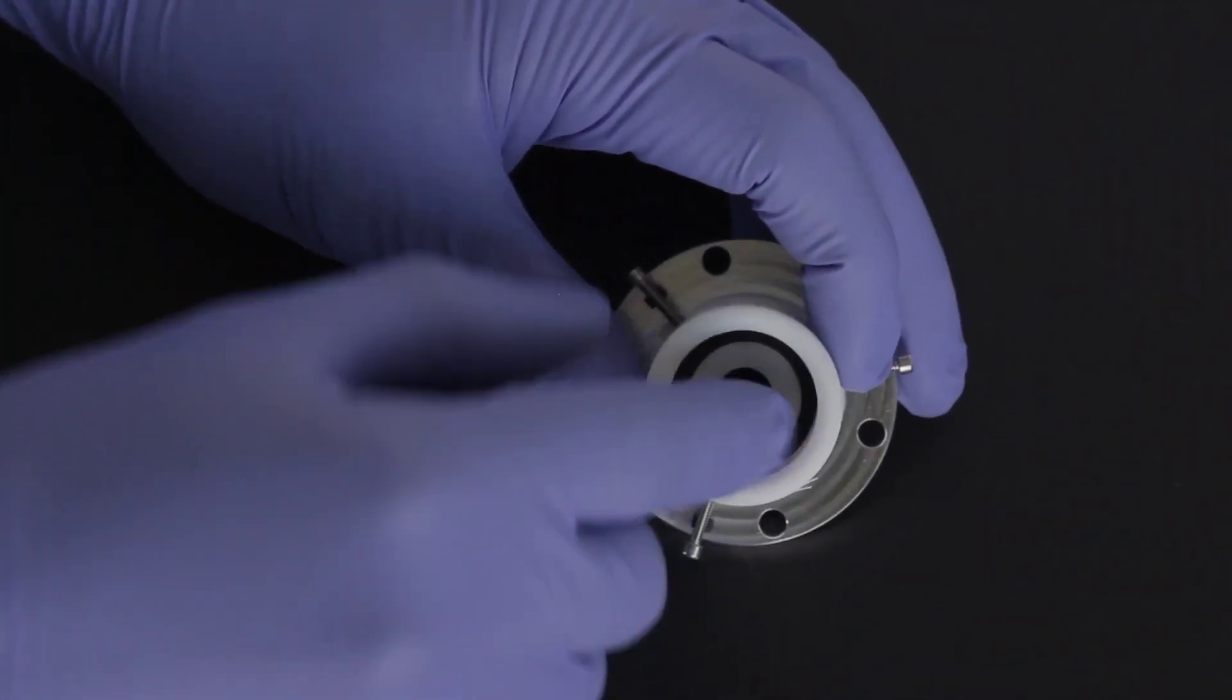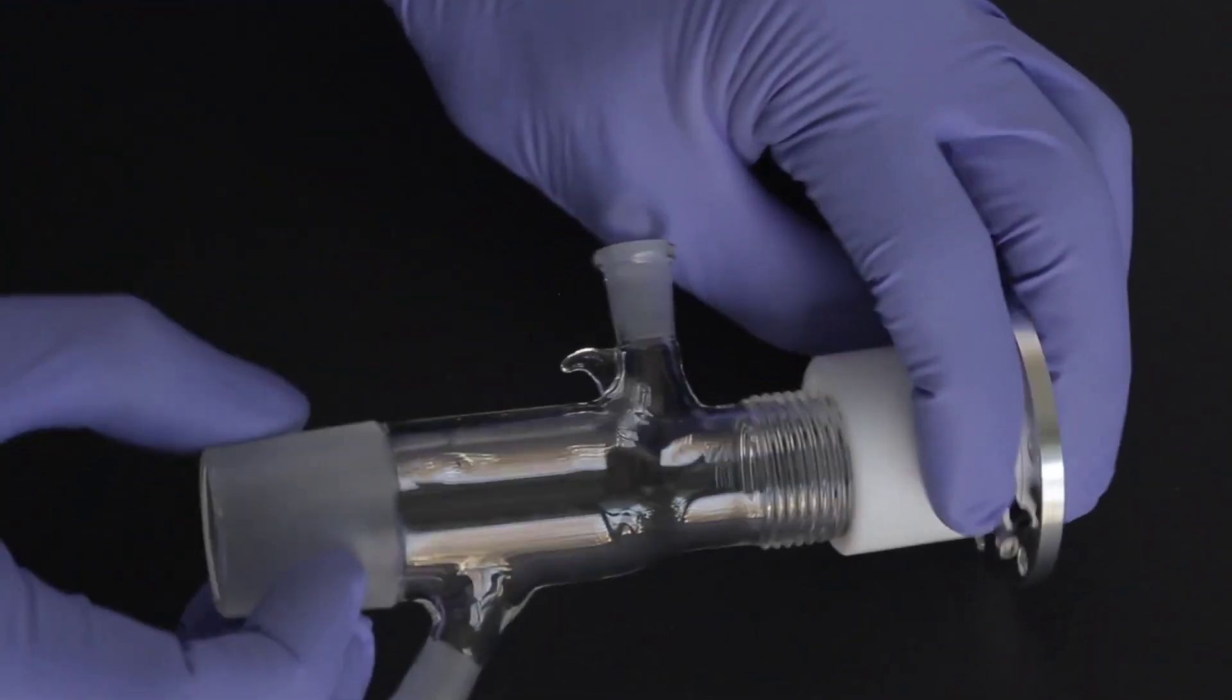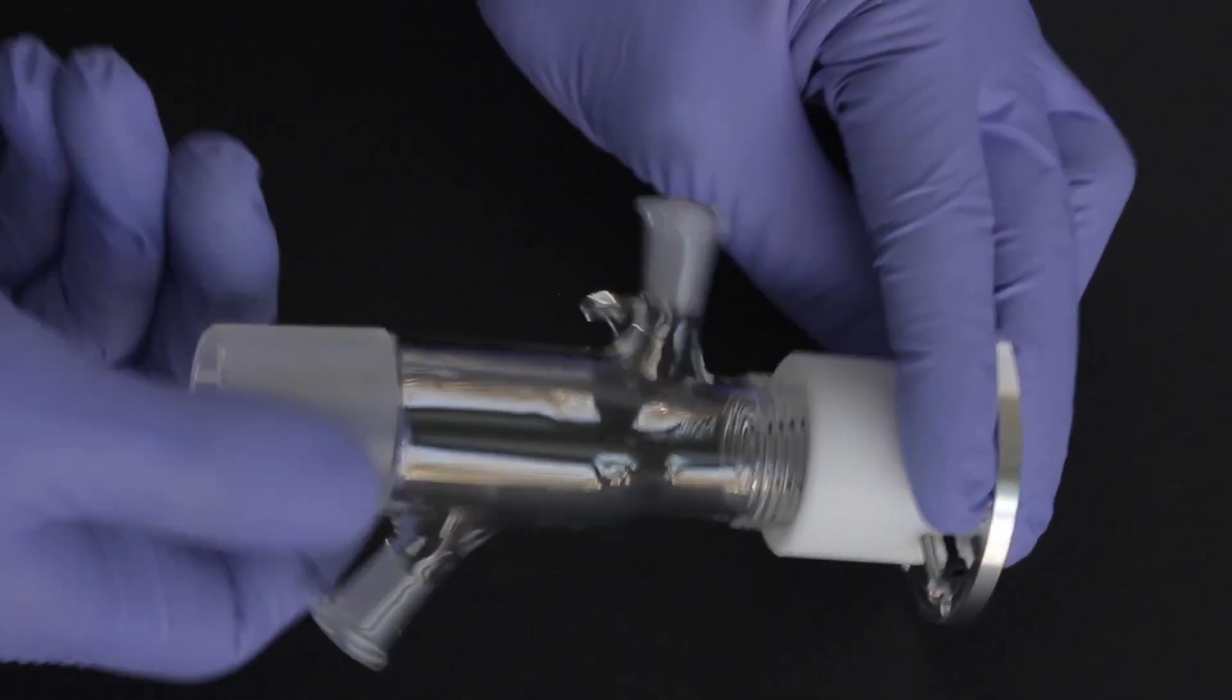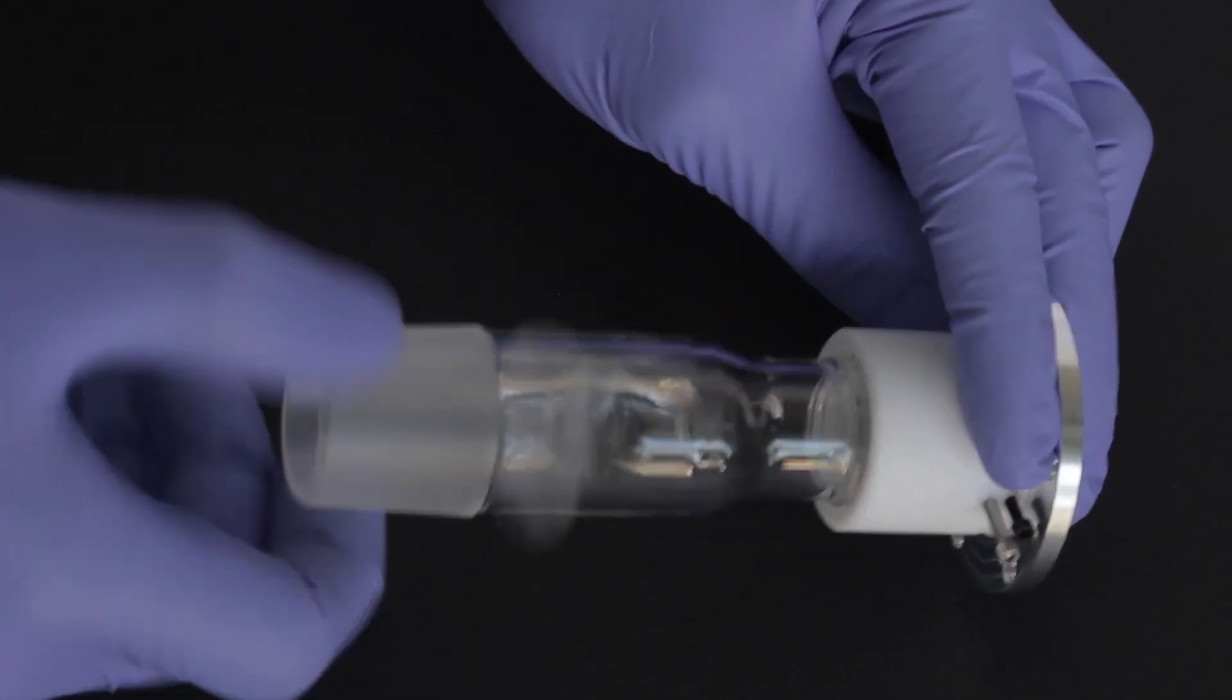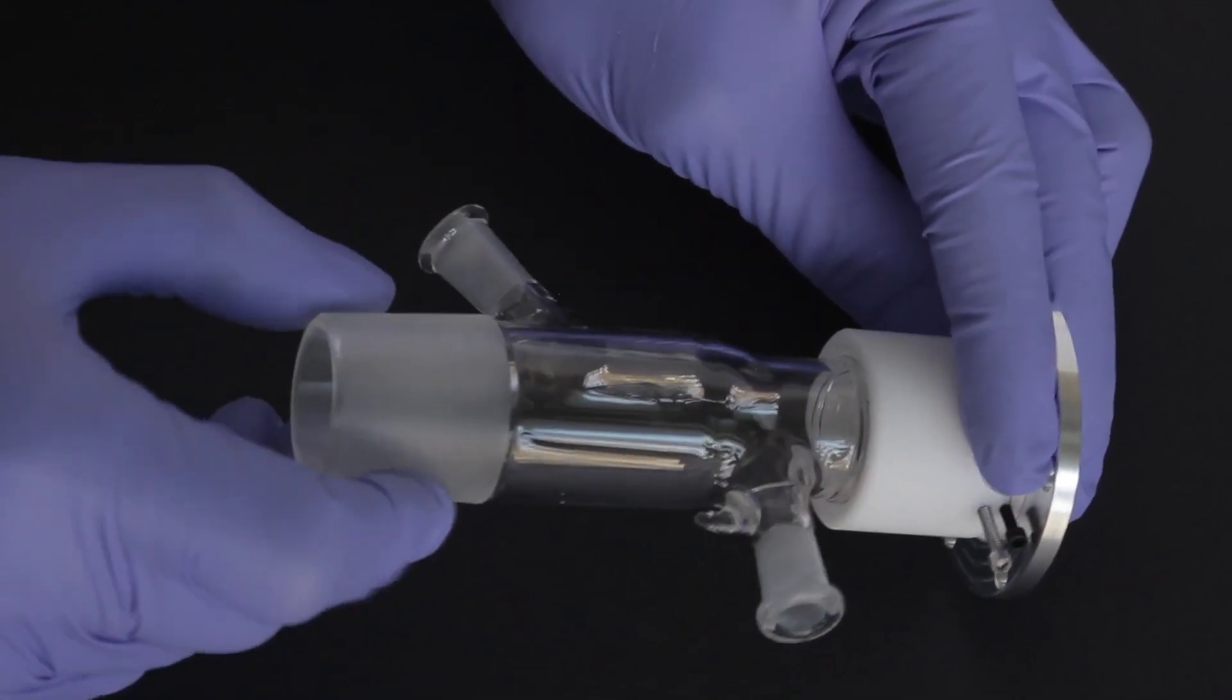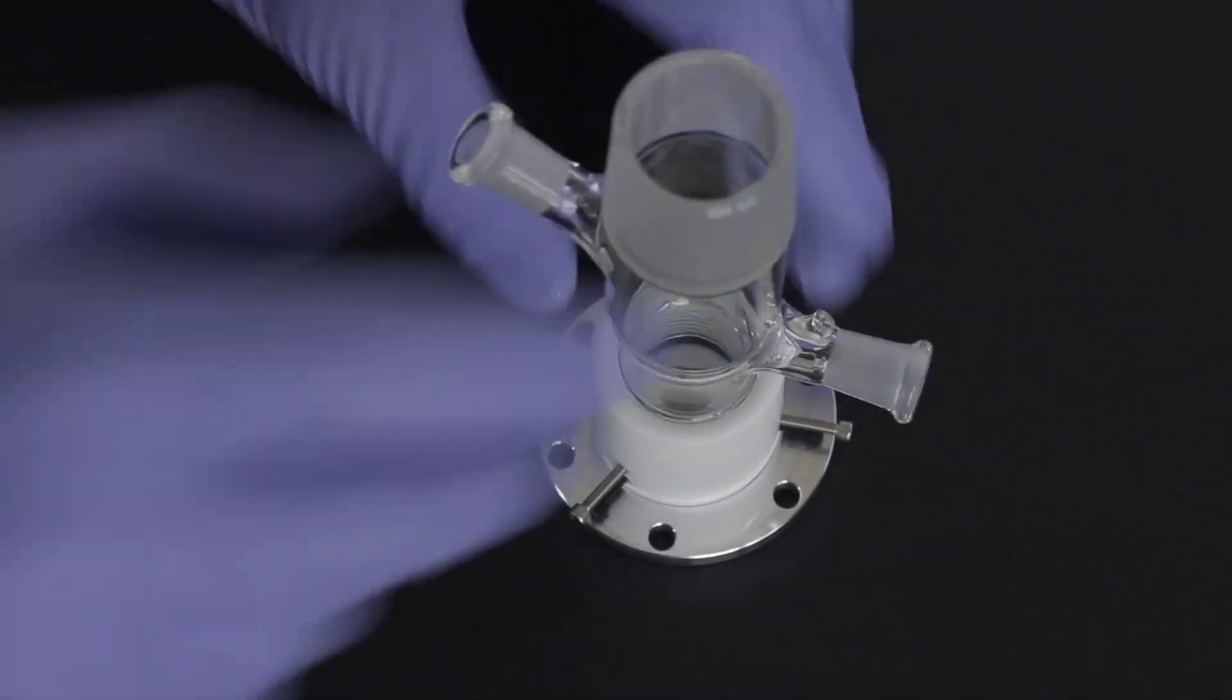Flip the cell base over and install the upper o-ring. Screw the glass cell body into the base until it bottoms out and seals against the o-ring. Only a small amount of torque is required to seal the cell. Do not tighten any more than 1/8th of a turn after the point where you begin to feel resistance.